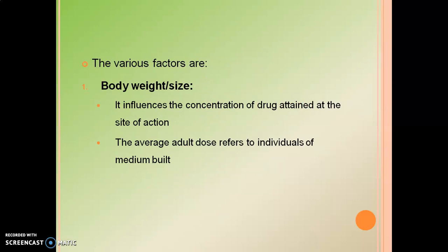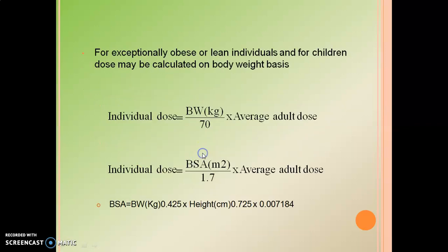The first factor is body weight. It influences the concentration of drug attained at the site of action. The average adult dose refers to an individual of medium build. Children have different weights, and adult patients also have varying weights. The formula for individual dose is: Individual Dose = (BSA in m² / 1.7) × Average Adult Dose, where BSA means Body Surface Area.